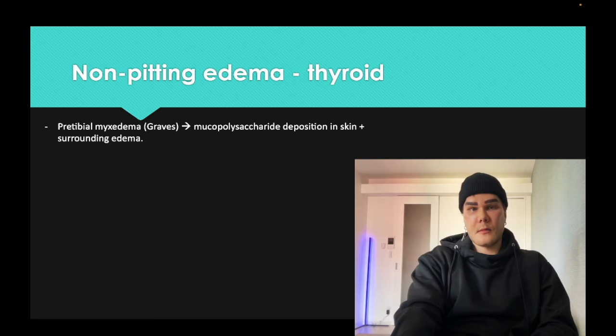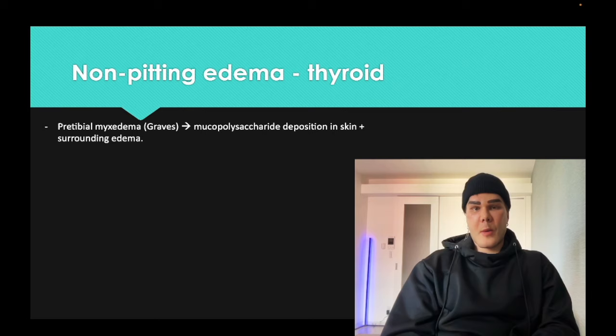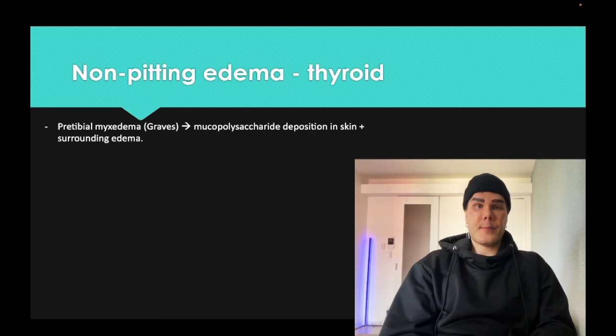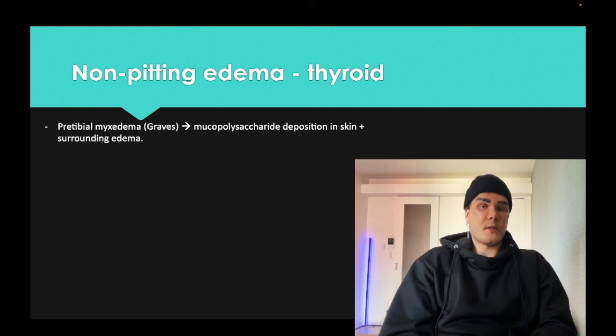Thyroid: pre-tibial myxedema is associated with Graves' disease — it involves mucopolysaccharide deposition causing surrounding skin edema. Glycosaminoglycan deposition in the eyes also causes proptosis and exophthalmos — the ophthalmopathy of Graves'. If a question describes hyperthyroidism but explicitly states there is no pre-tibial myxedema or proptosis, that's their way of saying it's not Graves'. Other causes of hyperthyroidism include de Quervain's thyroiditis, toxic multinodular goiter, or toxic adenoma.